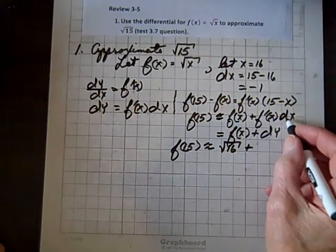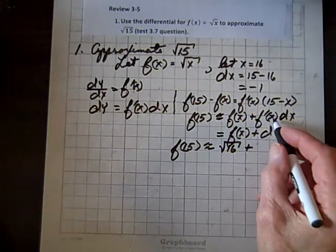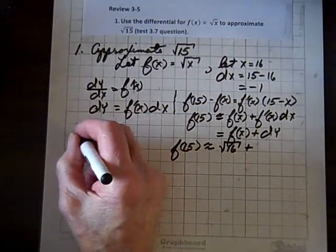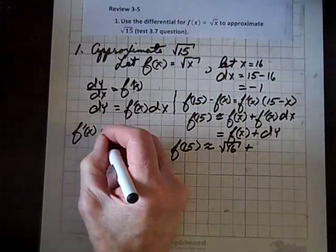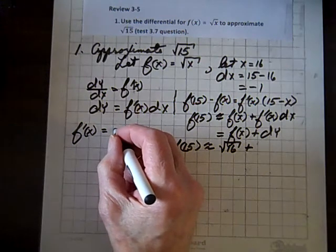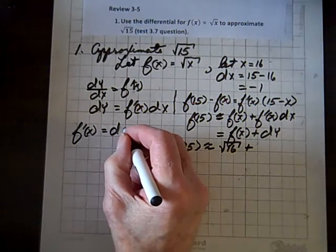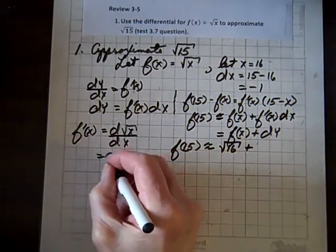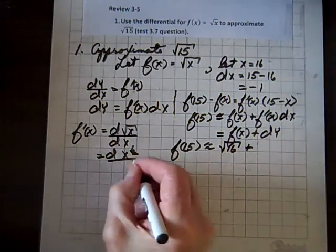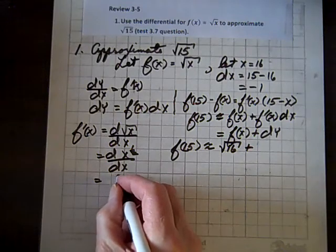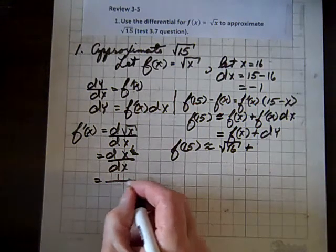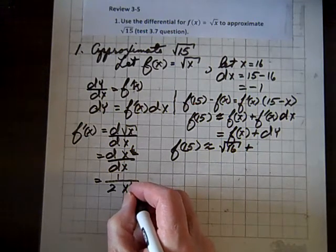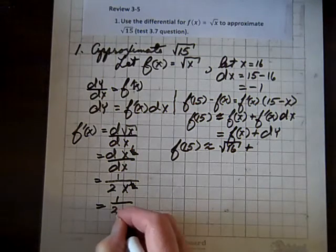Well, dy is f prime of 16. And first, before we deal with this, let's see what f prime of x looks like. And isn't that going to be the derivative of the square root of x with respect to x, which equals the derivative of x to the one-half with respect to x, which equals one-half times x to the negative one-half.